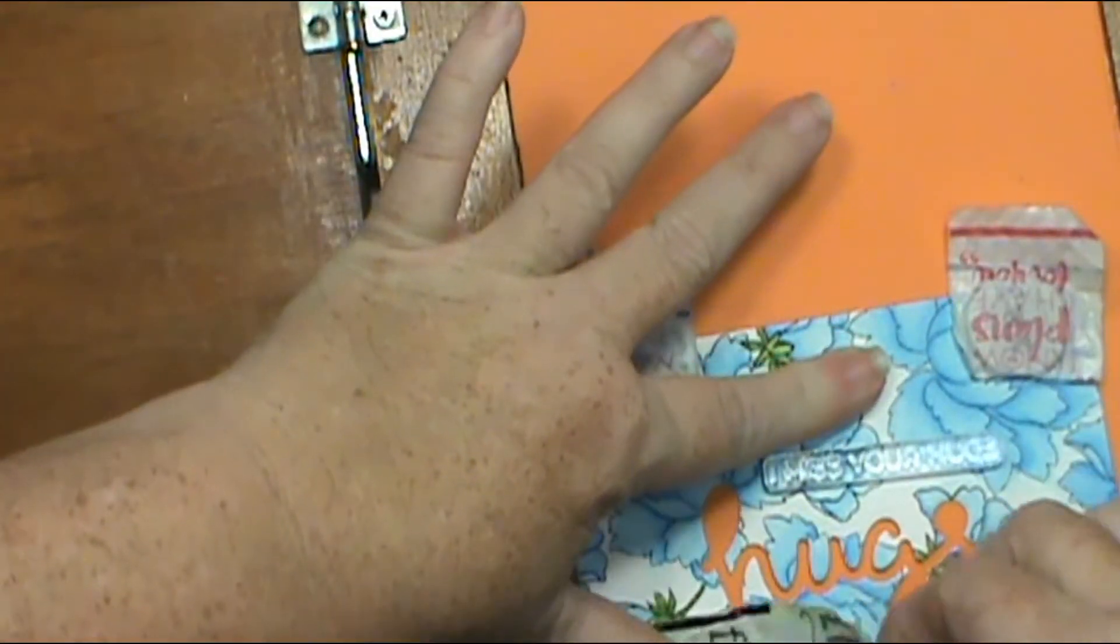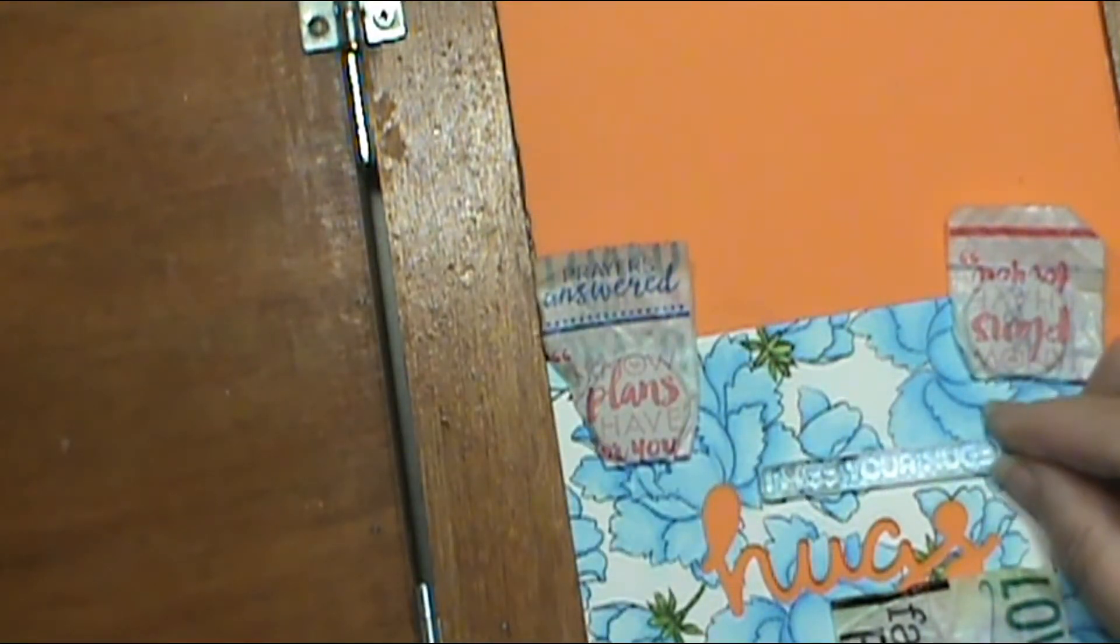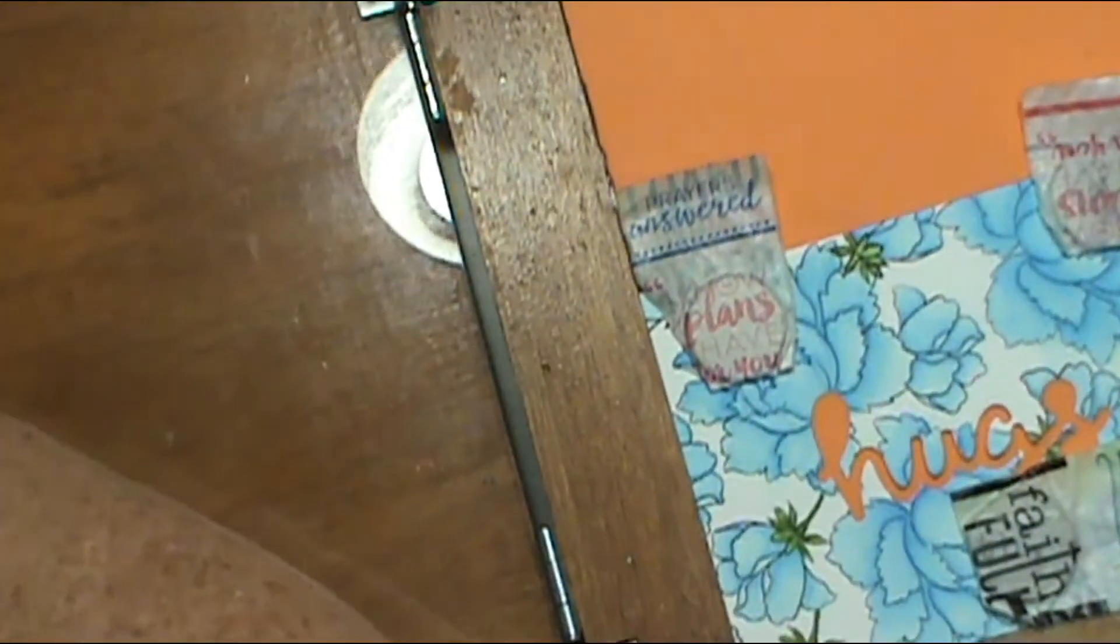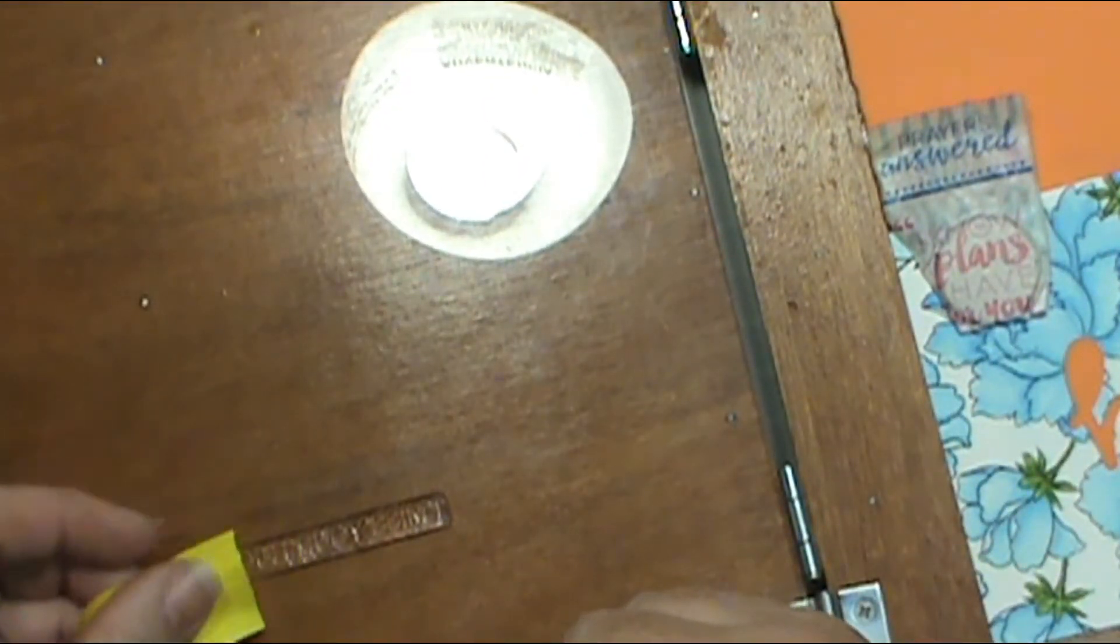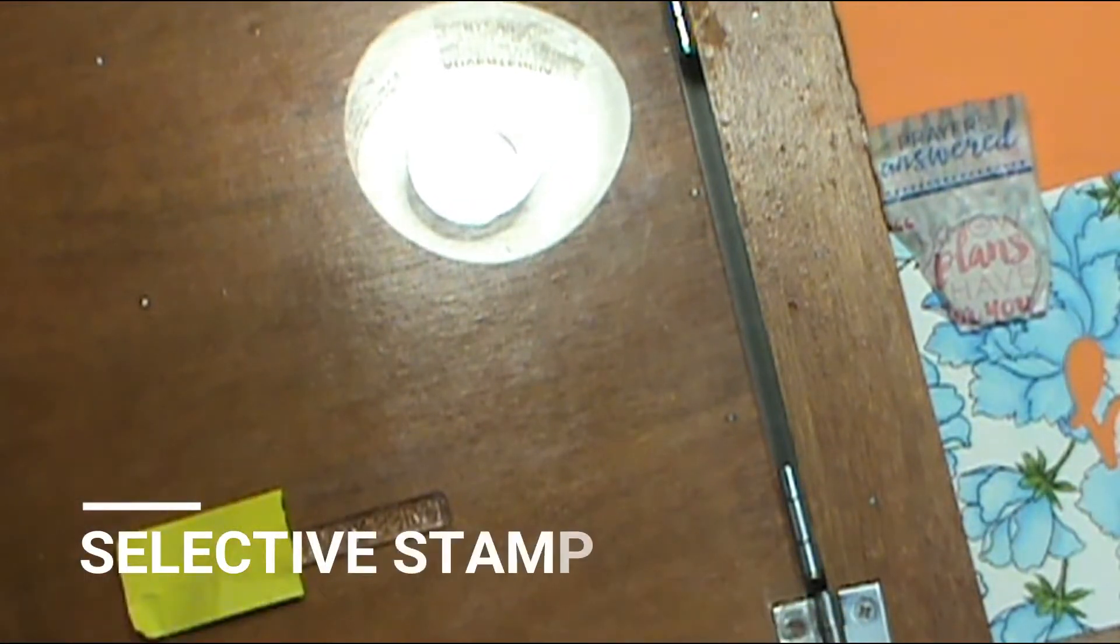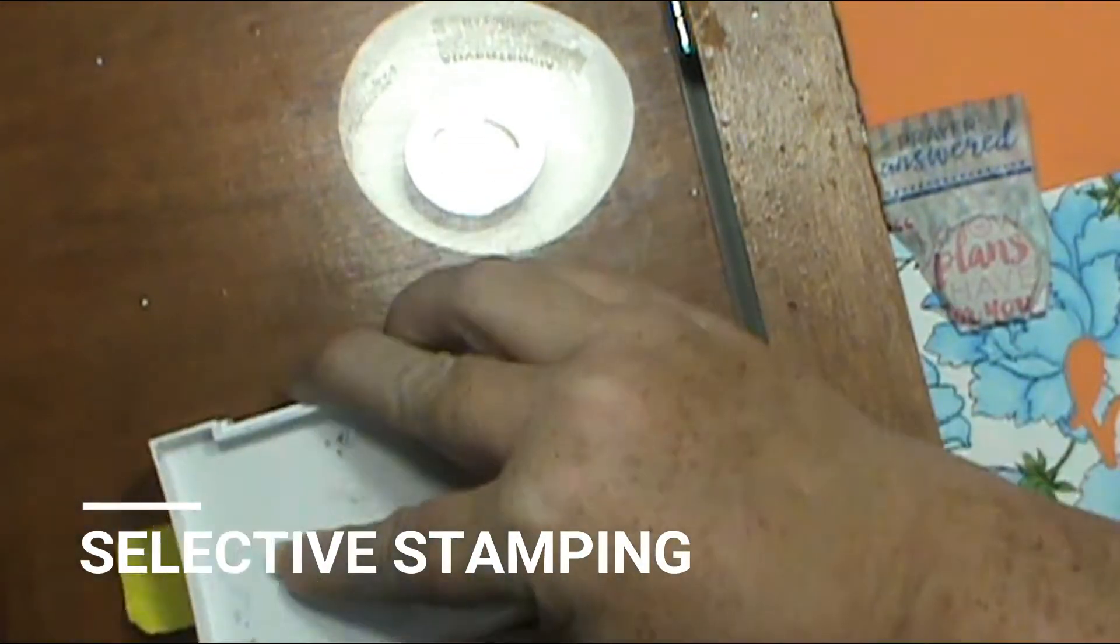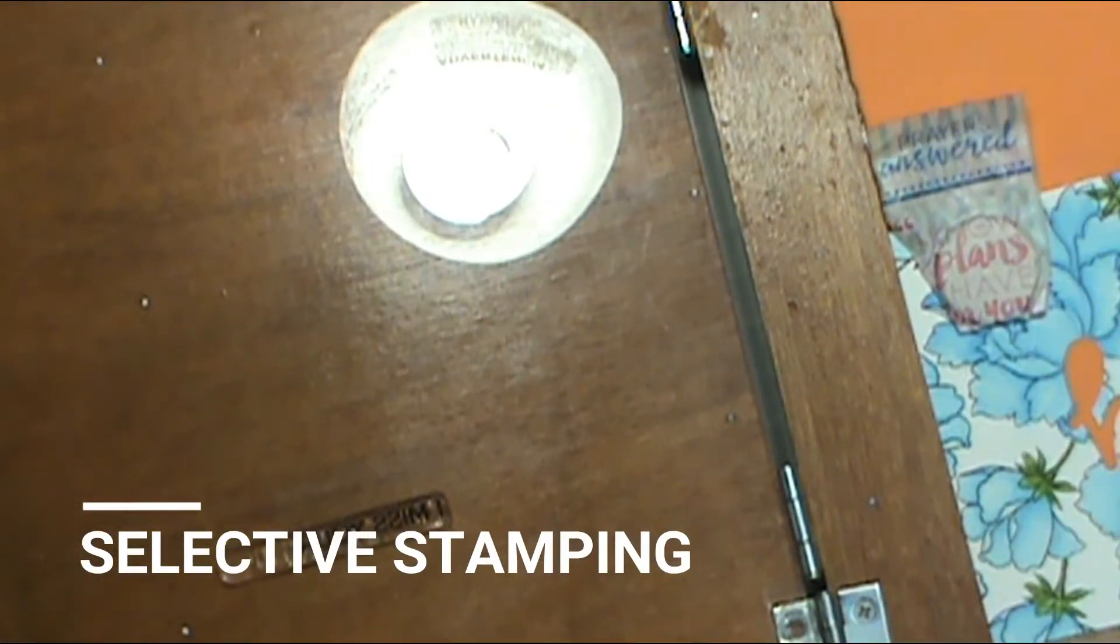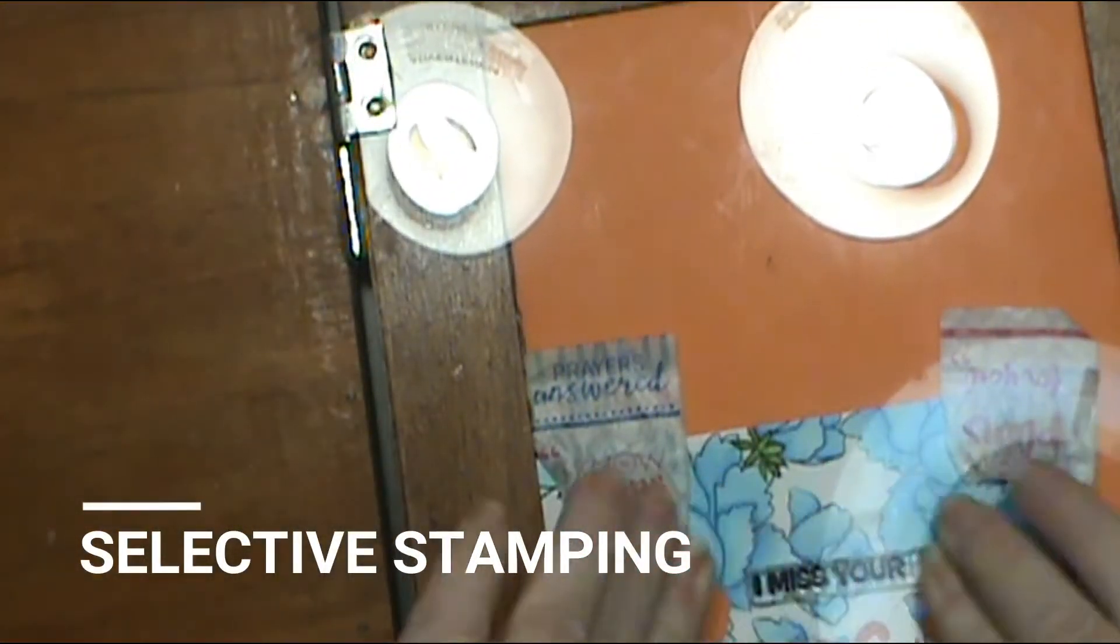This is an MFT More Essential Sentiment set and it actually goes with something else, but it works great for any of your die cut words. I'm just doing some selective stamping. I've marked off what I didn't want with some post-it note so I didn't get the word Hugs because I already had it die cut out. So it says I miss your and then the word Hugs is the die cut piece beneath it.